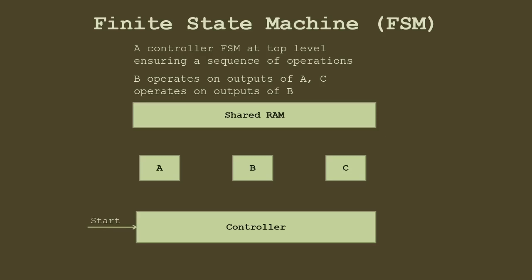The controller is started by an external start signal. Whenever there is a start signal we start A — we send a start signal to A. A does its processing and when it's done it sends a done signal. All these signals are single cycle pulses. When A is done we start B, when B is done we start C, and when C is done we generate a final done signal showing all processing is completed. So we need a controller that can start these processes and wait for done.